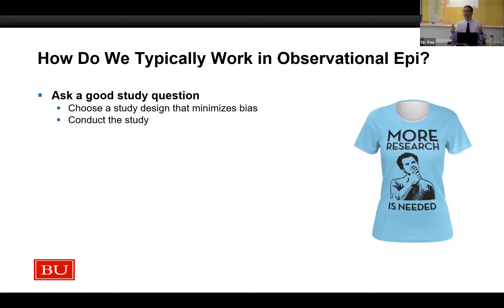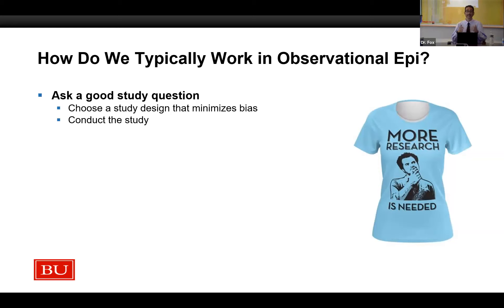Then we choose a study design that is designed to minimize sources of systematic error. All epidemiology is an exercise in the rational use of limited resources, so we're never going to have the perfect study design. Sometimes we make decisions that allow more bias to creep in because that's all we can afford. So these are trade-offs, but we're trying to minimize the amount of bias.